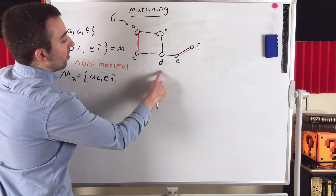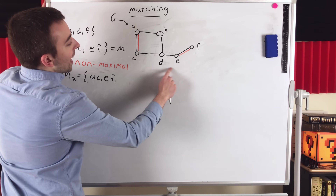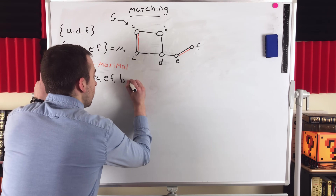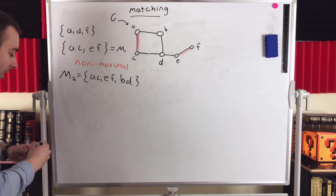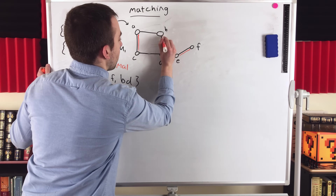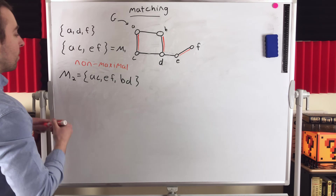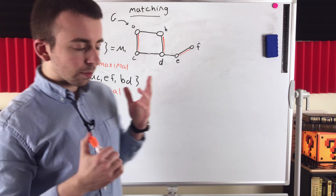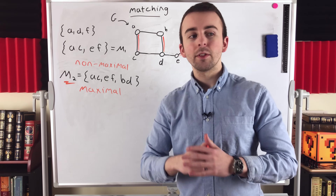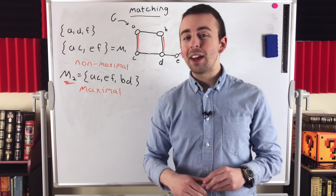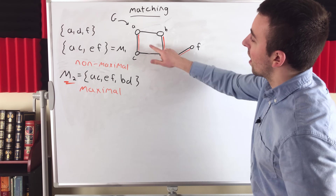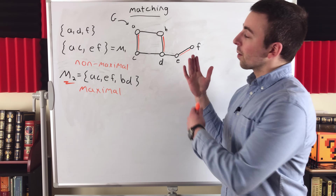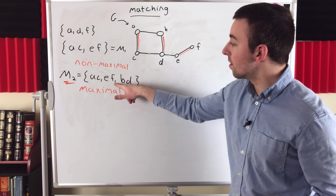So we add BD, highlighted in orange. This matching M2 is a maximal matching in graph G. It is not a proper subset of any other matching — we can't include any of the other edges to get a bigger matching because they all share a common vertex with at least one edge already in the matching. So we can't increase the cardinality of this matching by including any other edge.